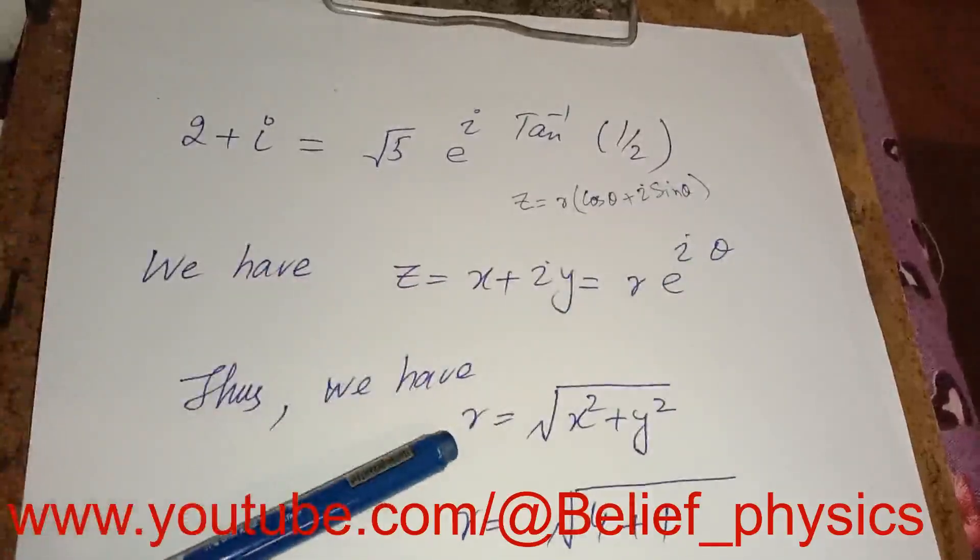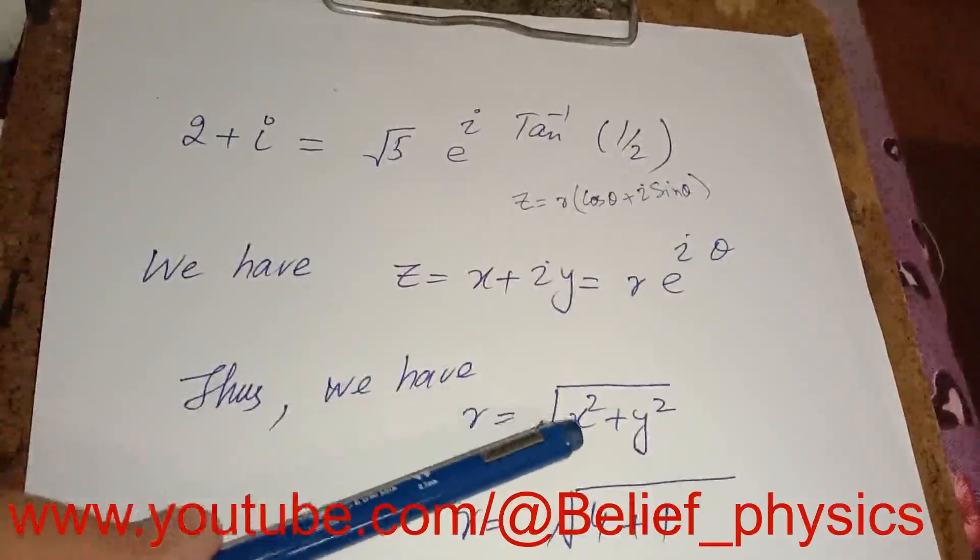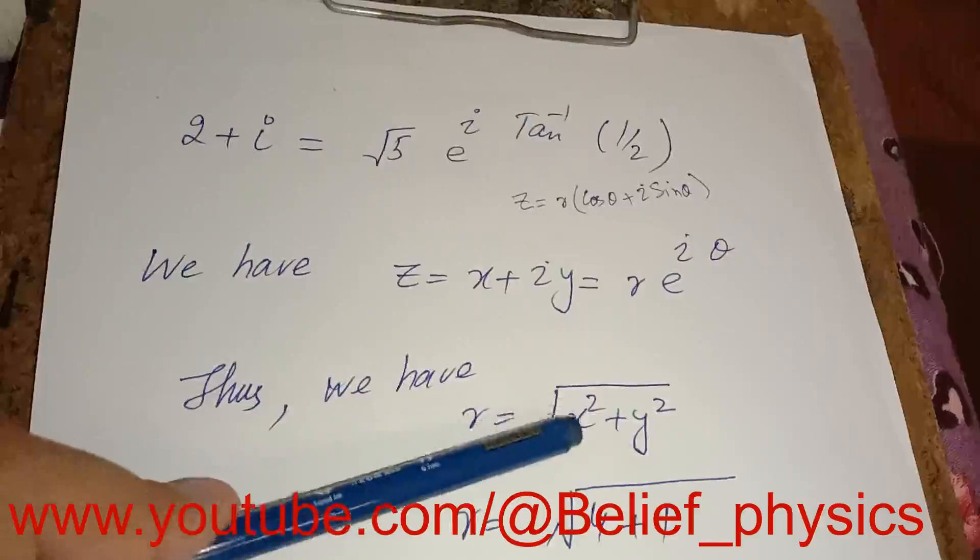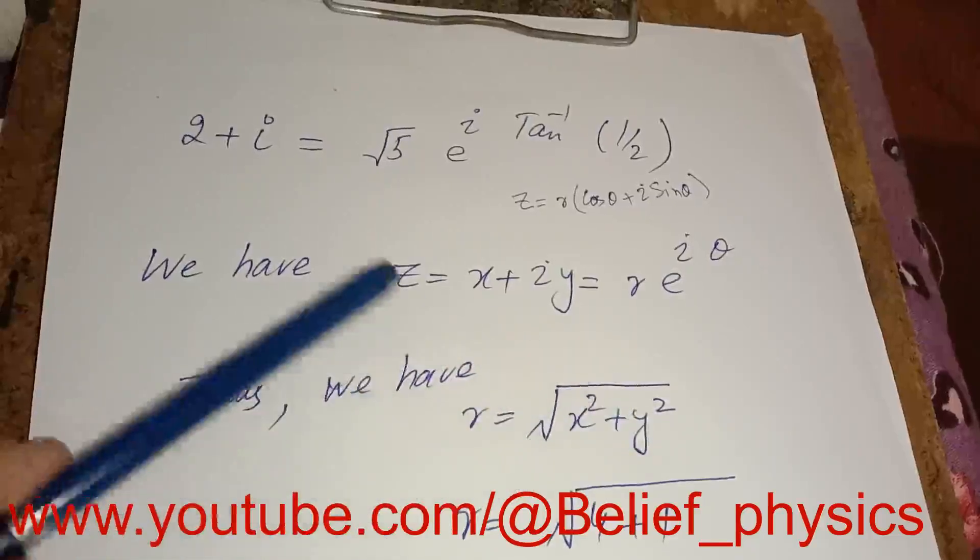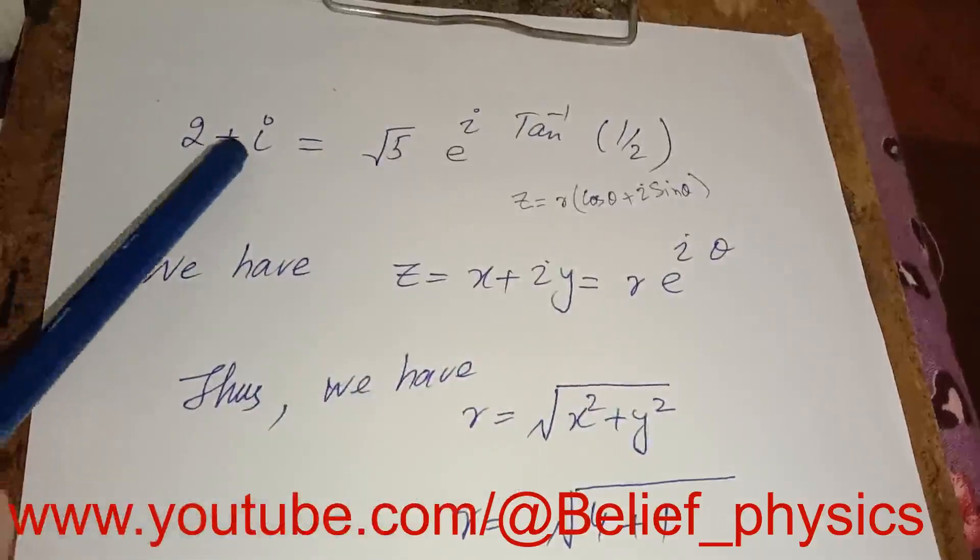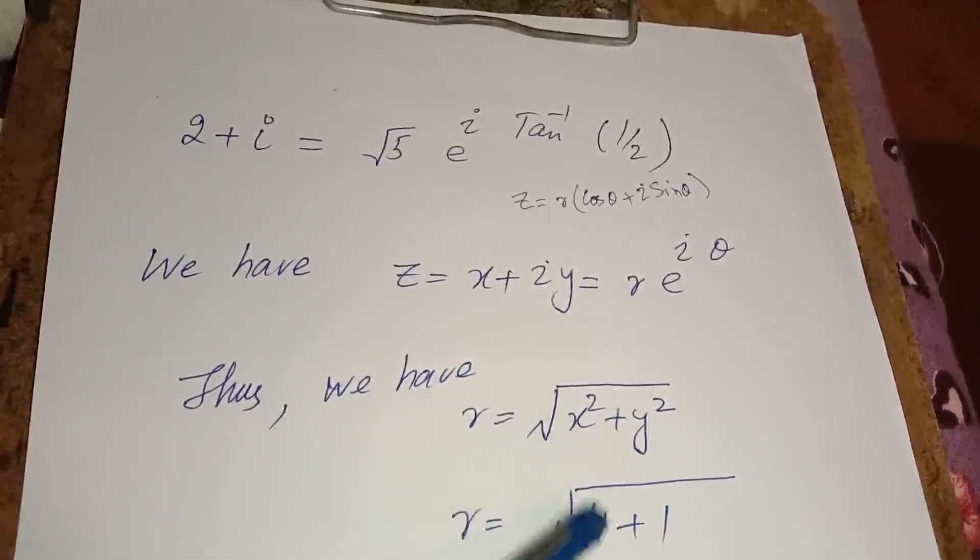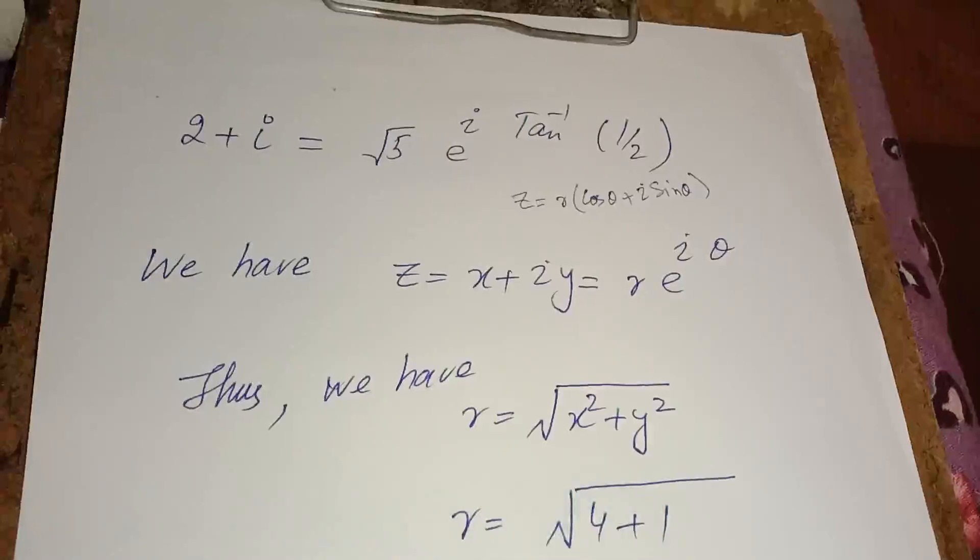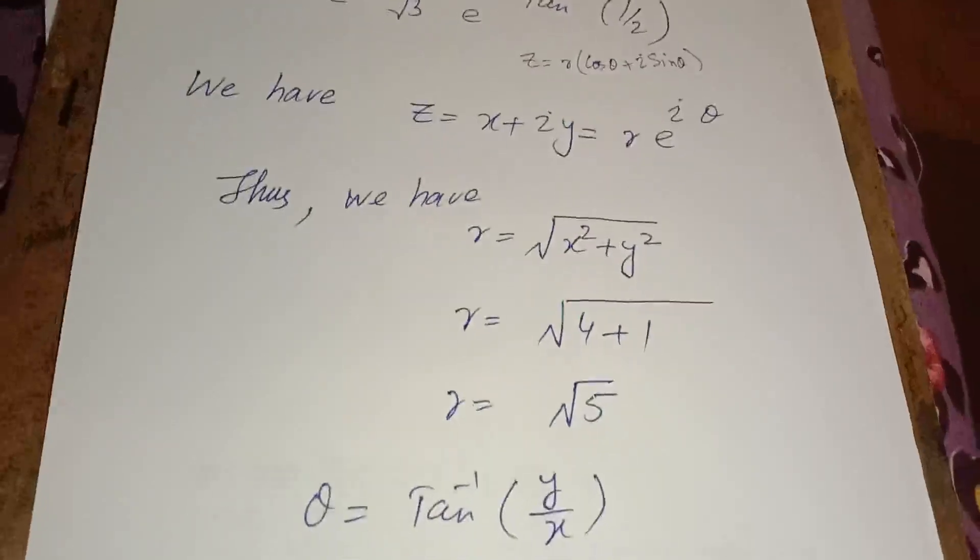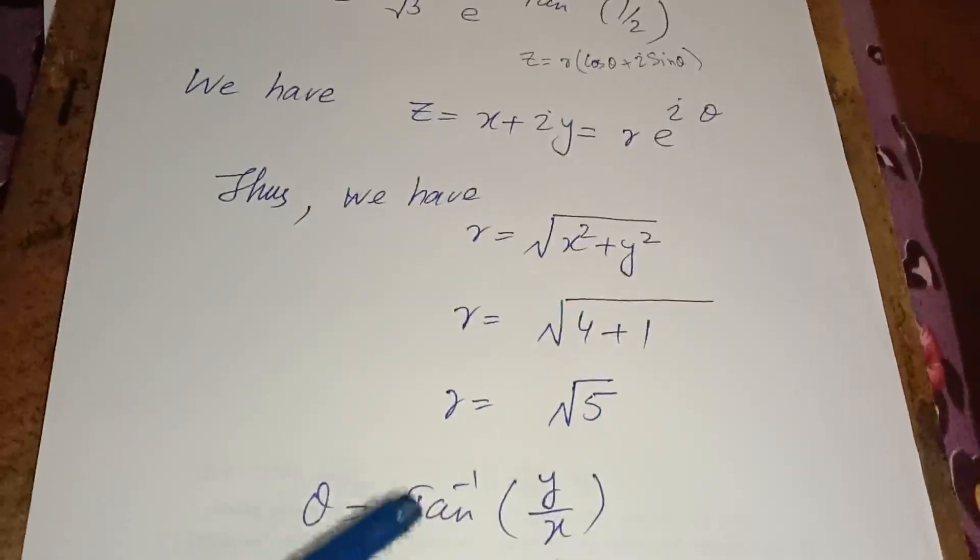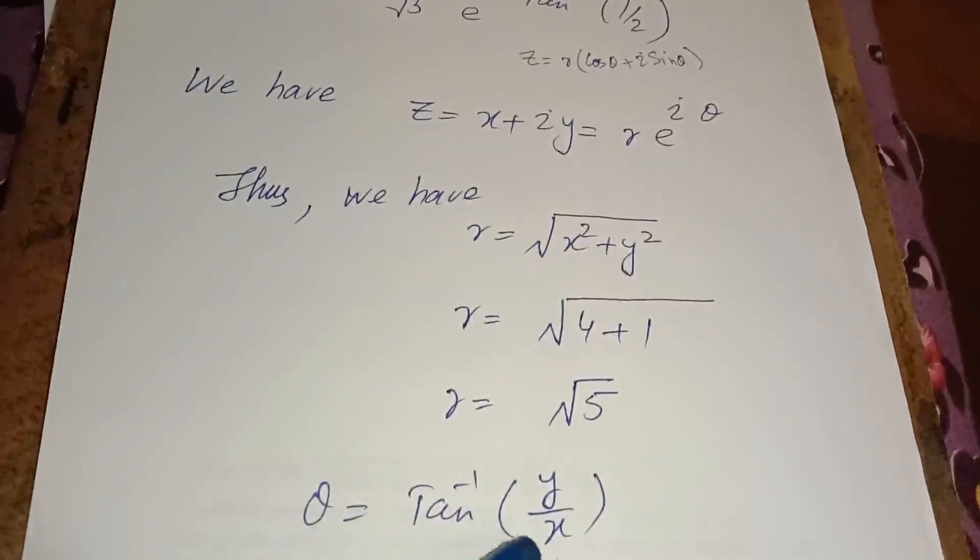Here we have to prove that r is equal to the root of x square plus y square. Here we have x is equal to 2 and y is equal to 1. Therefore, theta will be equal to tan inverse of y over x. So this will be equal to tan inverse of 1 over 2.